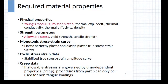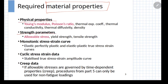In any design by analysis procedure, one requires material properties at the beginning. Out of the various material properties, the ones required first are the physical properties and the strength parameters. Among these, Young's modulus, Poisson's ratio, and the allowable stresses are the essential properties, and these are obtained through the design code being used for the analysis.